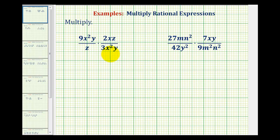We want to multiply the given rational expressions. Notice in these two examples, the numerators and denominators are monomials.